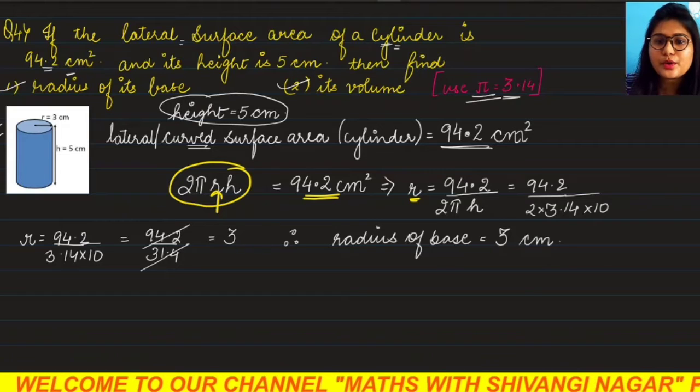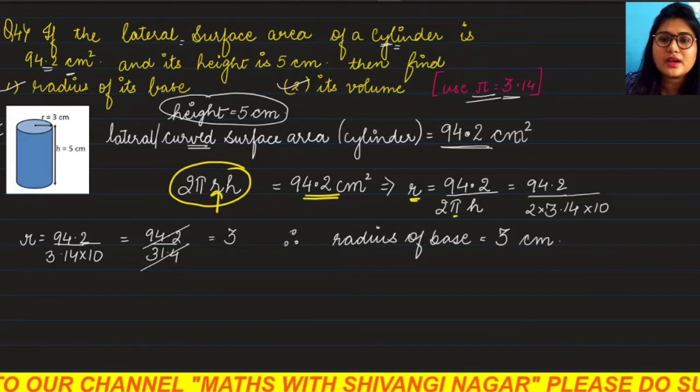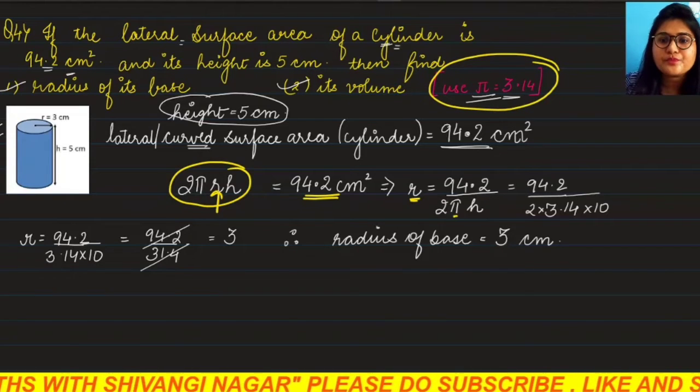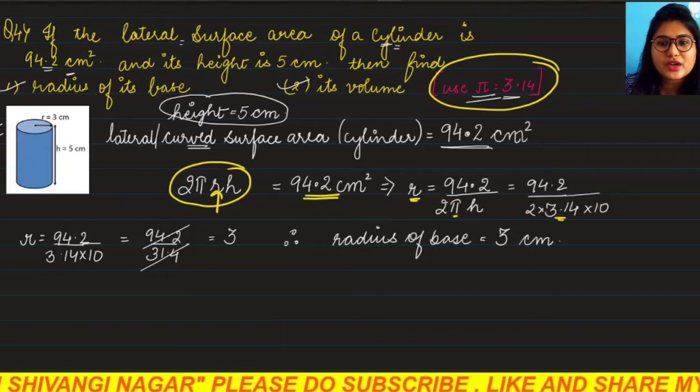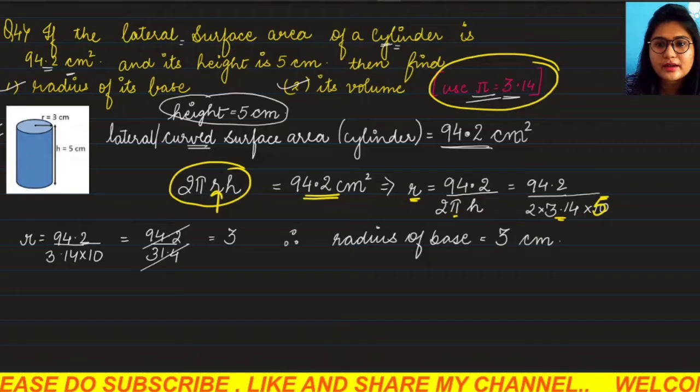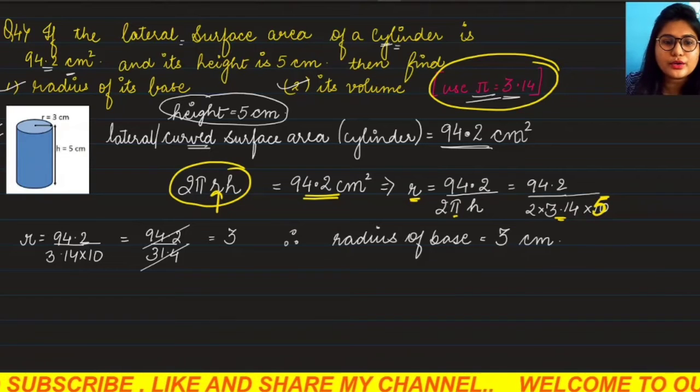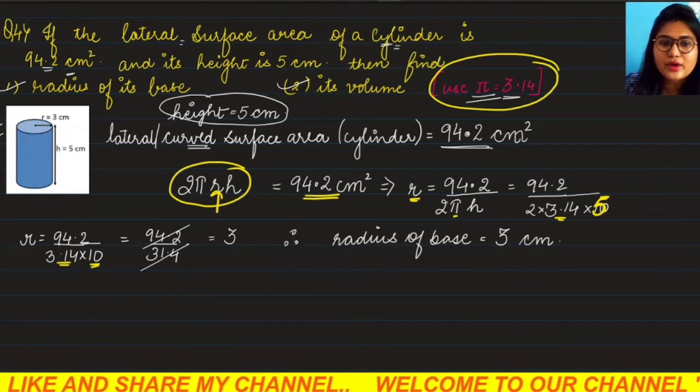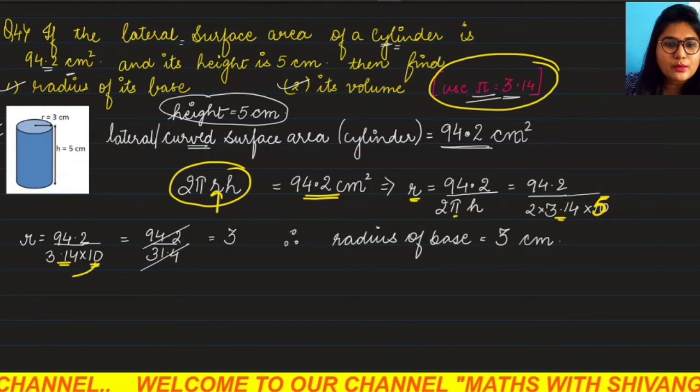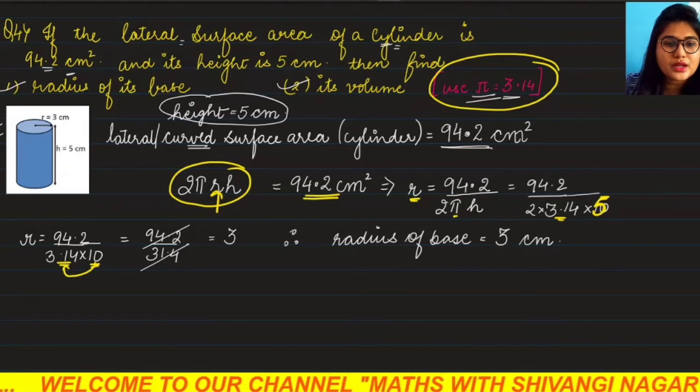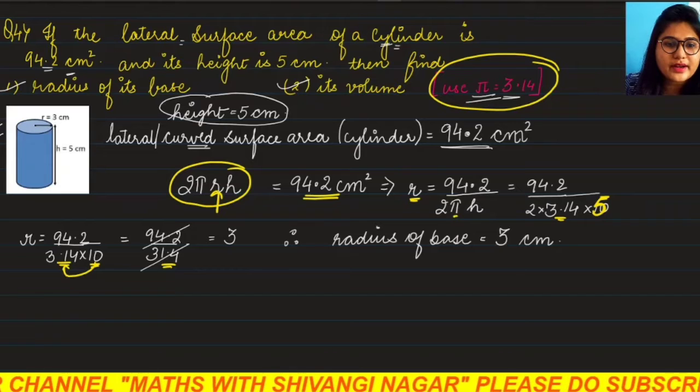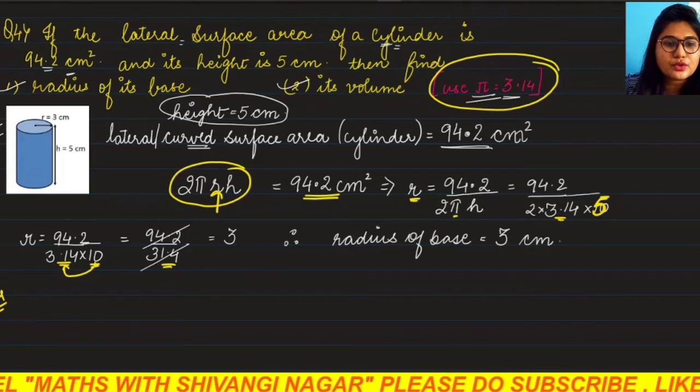Now π is given as 3.14, so we put here: r = 94.2 divided by (2 × 3.14 × 5). Put 5 here, 5 into 2 in denominator gives 10, and 3.14 as it is. When we divide 94.2 by 31.4, it cancels 3 times.